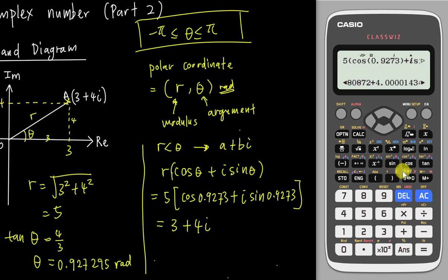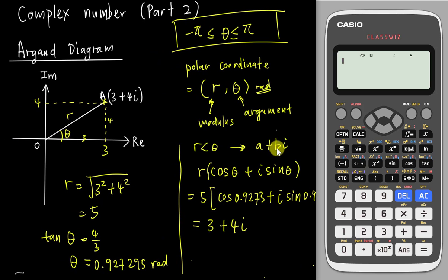Alright, so if you want to use a calculator to straight away change without doing this formula, the easiest way is in this calculator, you can type like this. This is 5 and then you go into shift and engineering button and then you enter your angle. In this case, maybe I just enter more decimals to get more accurate answer. 2, 9, 5. You can see I enter my r which is my modulus and my argument and I type enter. You see I can straight away get the answer as well, which is 3 plus 4i. So this is how to use a calculator to quickly convert between polar form and the complex number form.